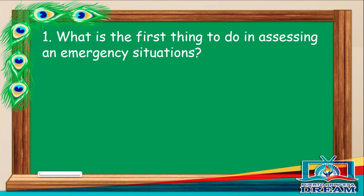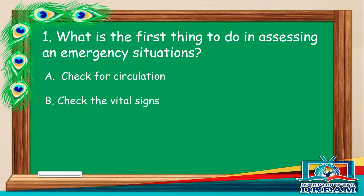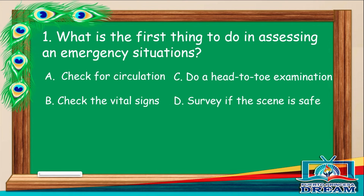What is the first thing to do in assessing an emergency situation? A. Check the circulation. B. Check the vital signs. C. Do a head-to-toe examination. D. Survey if the scene is safe.